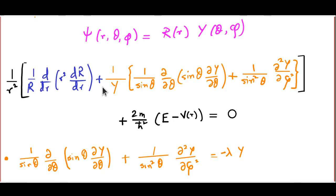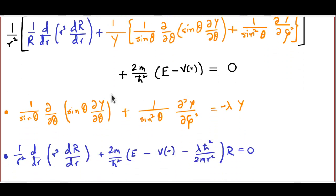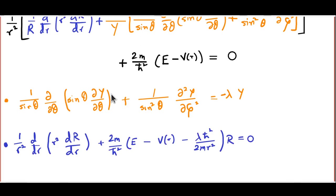If you put this piece equal to minus lambda and rearrange terms, the equation which capital R obeys — which is an ordinary differential equation — simply takes this form. So we now have two equations: an angular equation for capital Y and a radial equation for capital R. The radial equation will occupy our time in the next lecture. In this lecture, we focus on the angular equation.